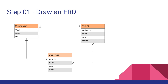In the diagram you can see the entity relationships shown. For organization to projects there's a one-to-many relationship — one organization can have multiple projects. Similarly, one organization can have multiple employees, so there's another one-to-many relationship. But between employees and projects there's a many-to-many relationship, because one employee can be part of many projects and one project can have many employees.